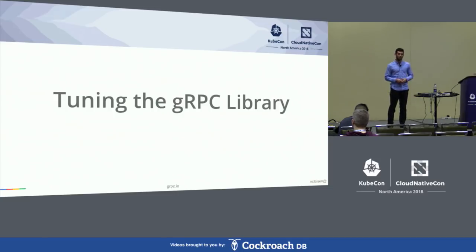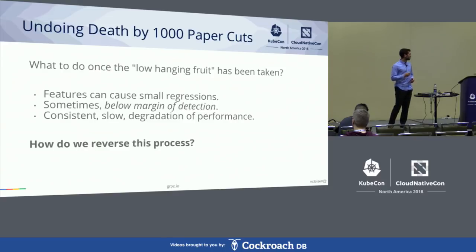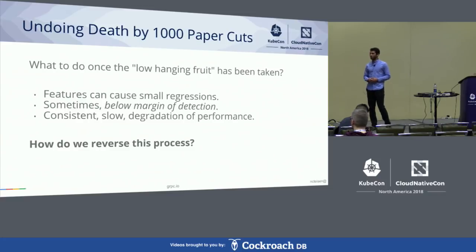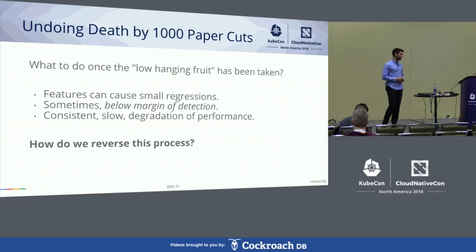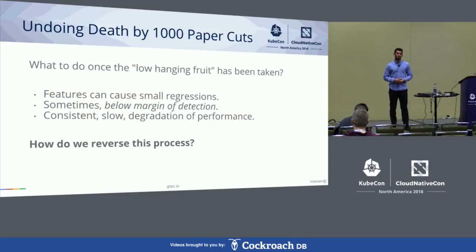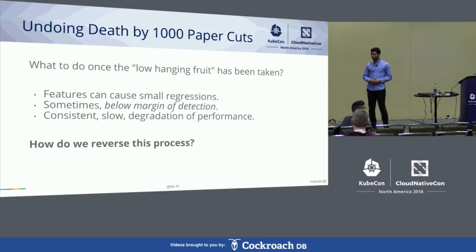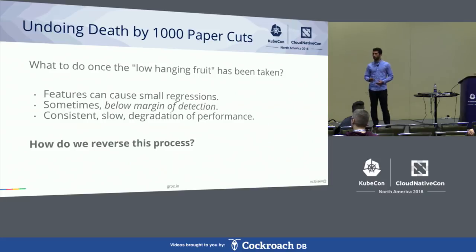Now we're going to dive into the gRPC library and talk about specific examples. I want to make a point: tooling, benchmarks, and data are awesome to have, but realistically your benchmarking system will come up a little later than the actual core functionality. gRPC found this to be the case — things that were known to be slow were fixed, we got the low-hanging fruit, and then it came time to ask where is the next big spot for optimization, and there wasn't a clear answer.